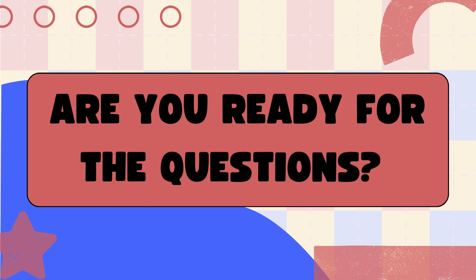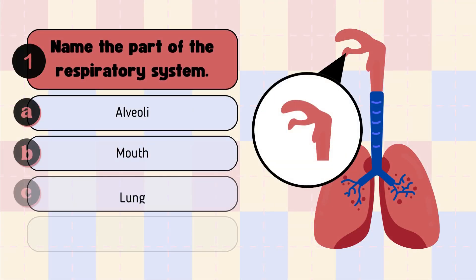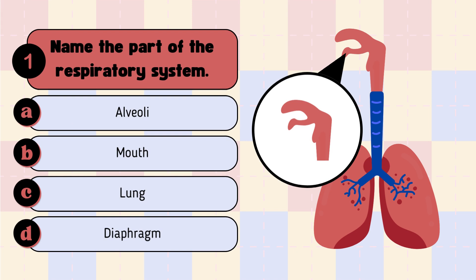Study the diagrams in this set of questions, identify the path that is highlighted, and answer the question that follows. Question 1: Name the path of the respiratory system. A. Alveoli, B. Mouth, C. Lungs, D. Diaphragm. Write your answer in number 1.